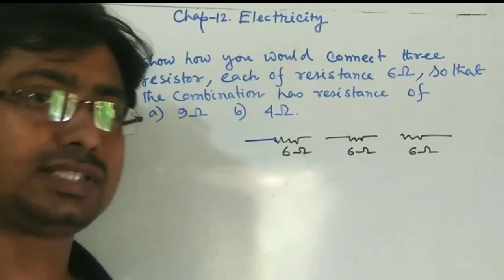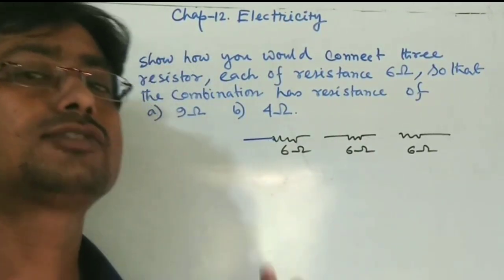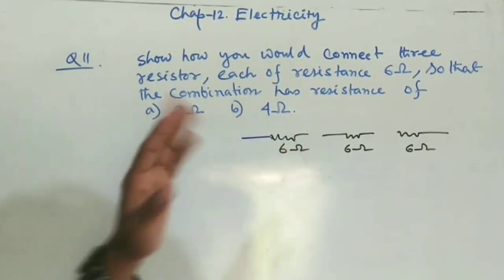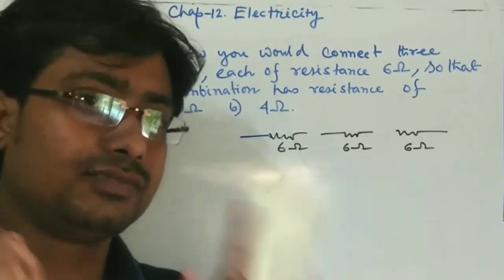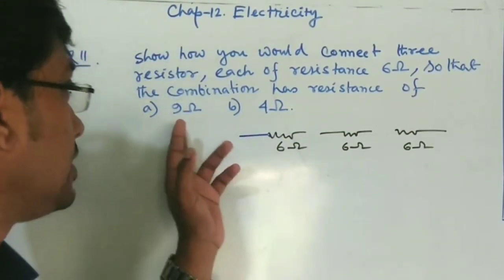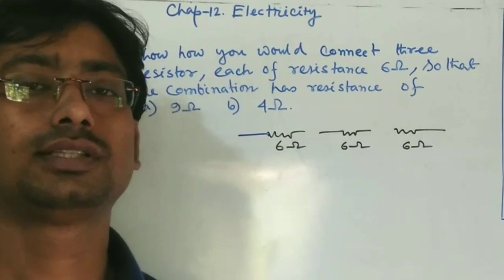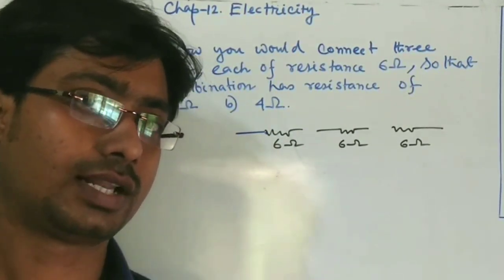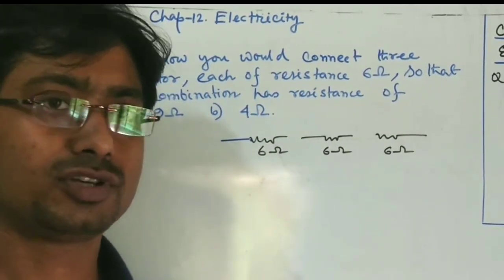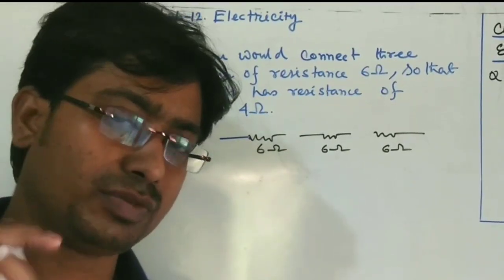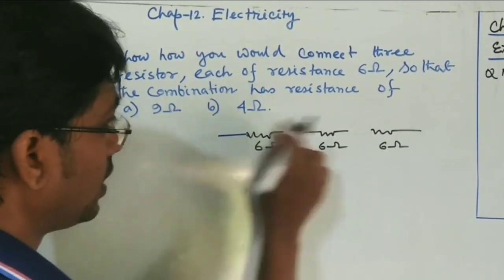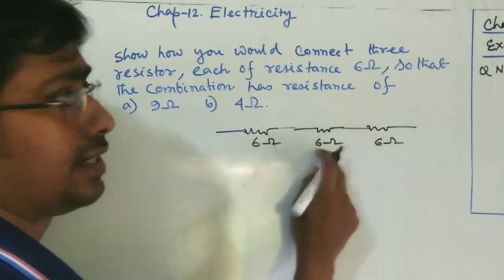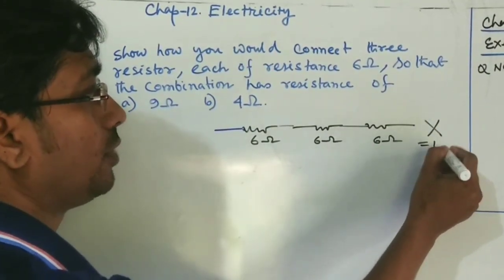Next, for the parallel combination: if all three resistors are in parallel, then 1/6 + 1/6 + 1/6 = 3/6, so the answer will be 2 ohm. Since neither 18 ohm nor 2 ohm matches our targets, it is clear the answer lies in a mixed combination of series and parallel.